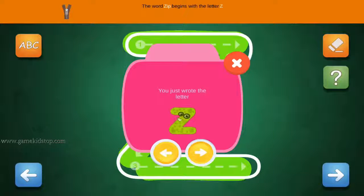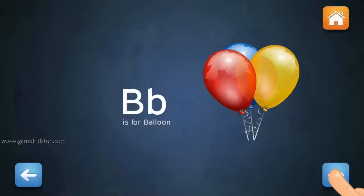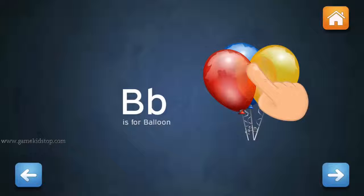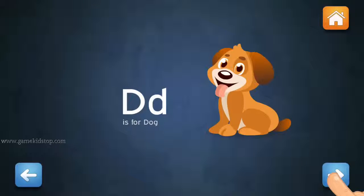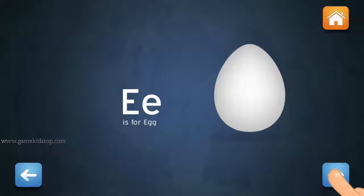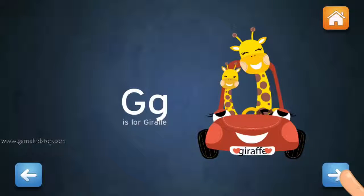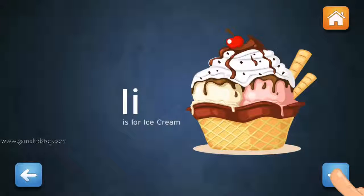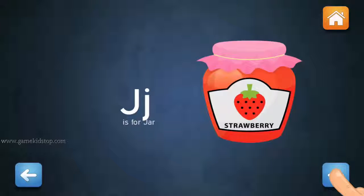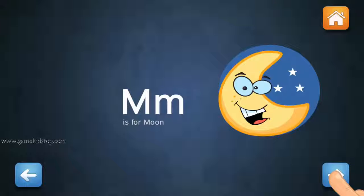B, B for Balloon. C, C for Cat. D, D for Dog. E, E for Egg. F, F for Fish. G, G for Giraffe. H, H for Hat. I, I for Ice Cream. J, J for Jar. K, K for Kite. L, L for Leaf. M, M for Moon.